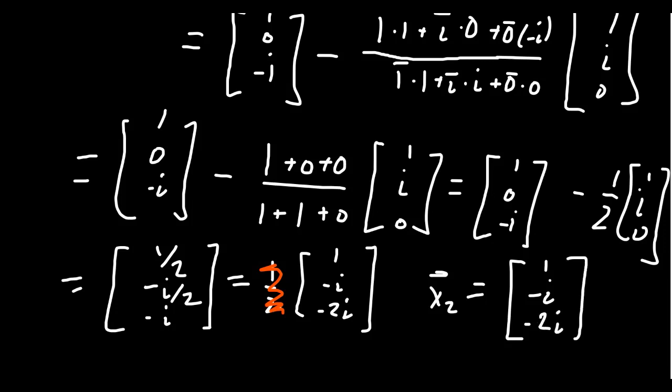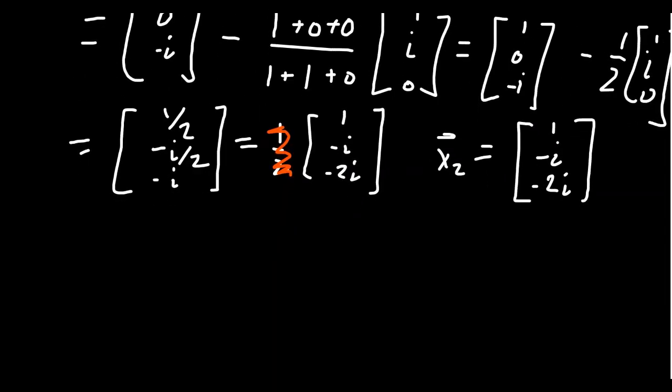And so let's check to see, in fact, if we got an orthogonal set or not. So as a reminder, the first vector, x1, which we didn't change, that was the vector 1, i, 0.